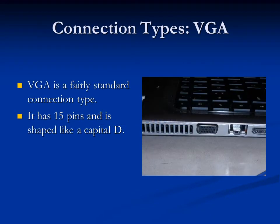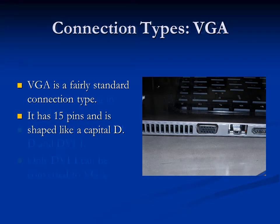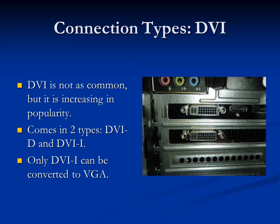Let's start with the connections. The first type is a VGA connection — it's a fairly standard connection type with 15 pins and is shaped like a capital D. The next is DVI. It's not as common but is increasing in popularity. It comes in two types: DVI-D and DVI-I. Only DVI-I can be converted to VGA.